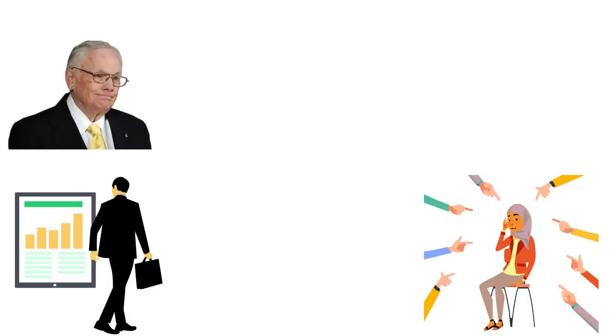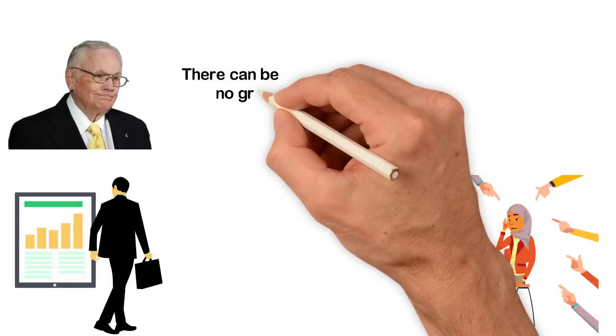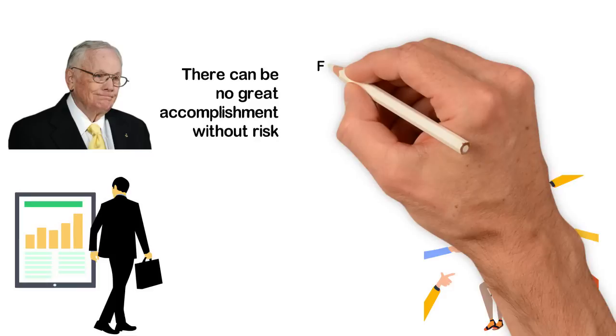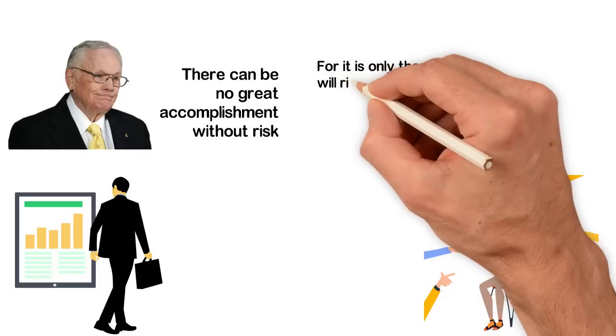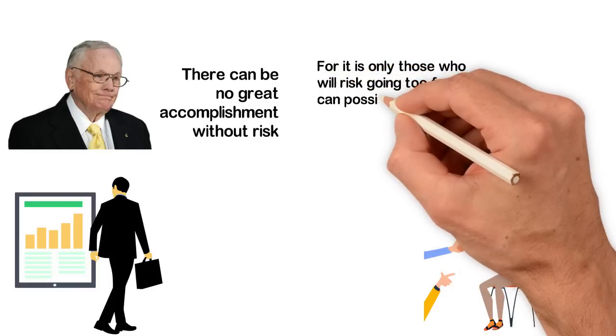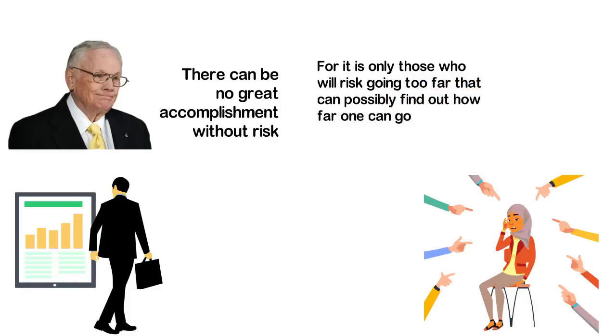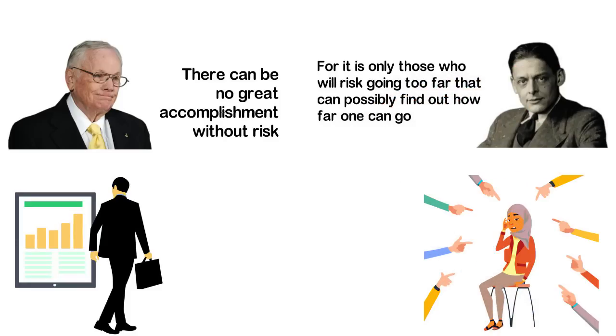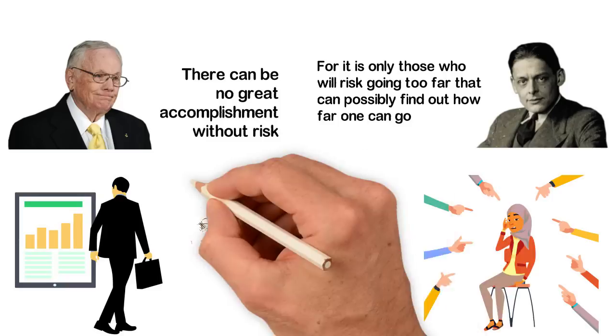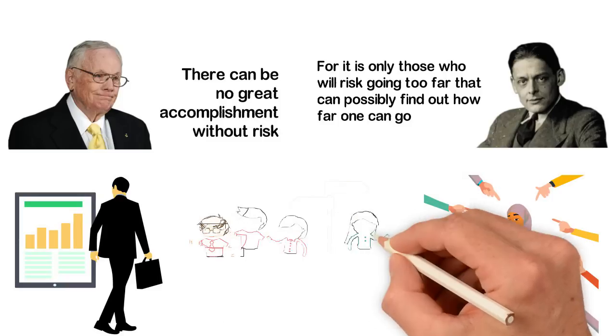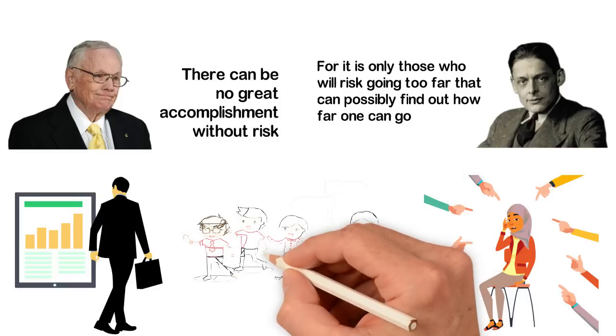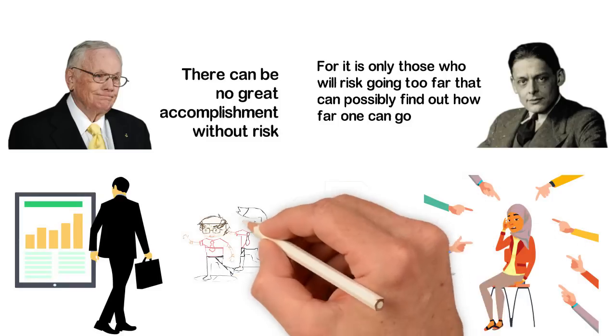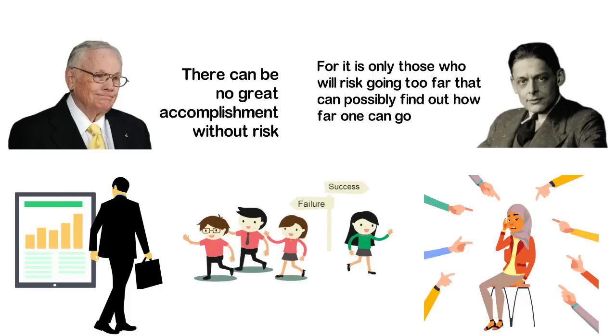Neil Armstrong once said that there can be no great accomplishment without risk. For it is only those who will risk going too far that can possibly find out how far one can go, T.S. Eliot added. Although the outcome for taking a risk could either be positive or negative, however, learning to take a calculated risk will most certainly lead to a positive outcome.